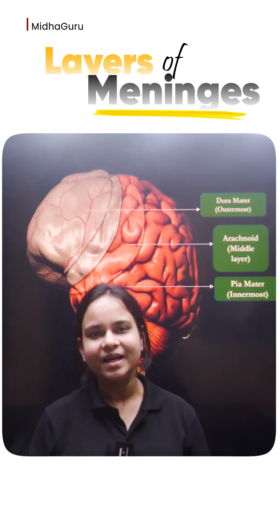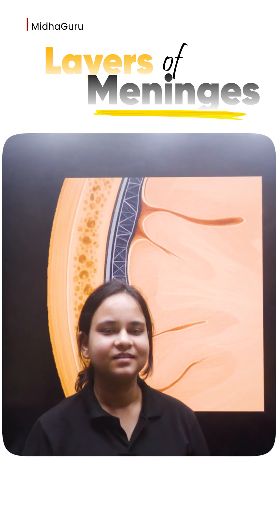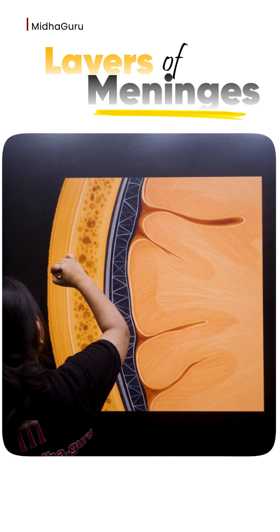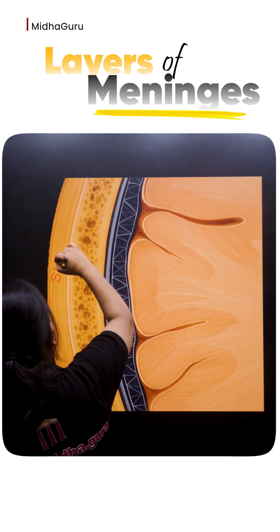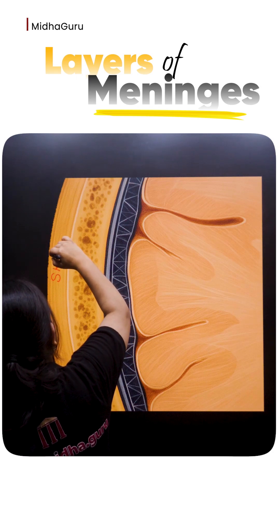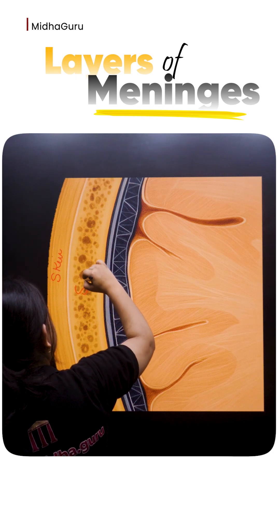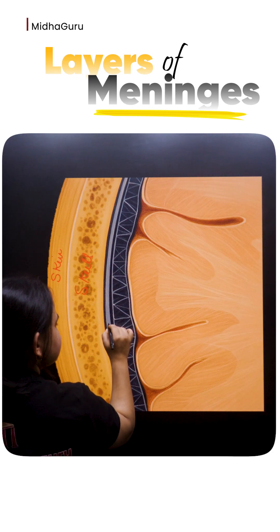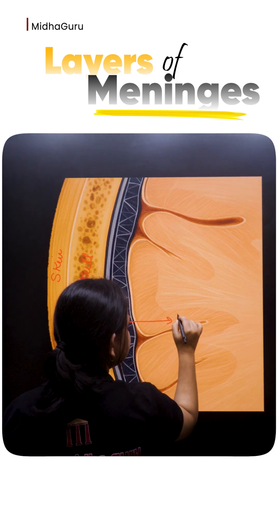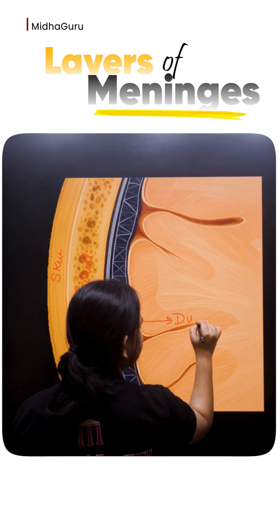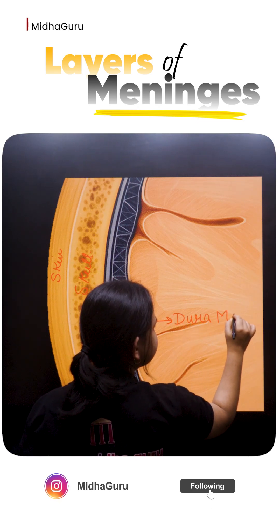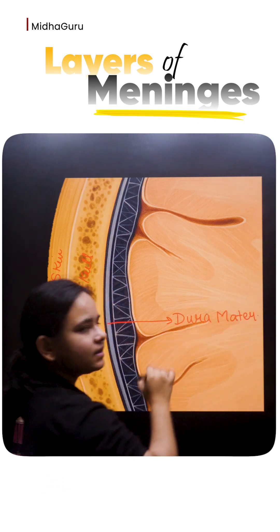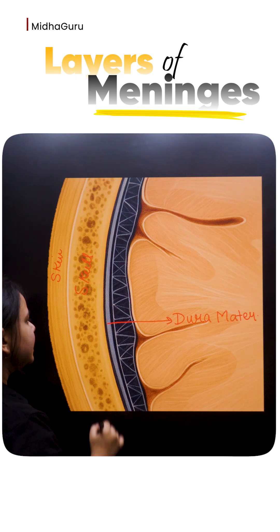Now let's discuss about the layers in brief. This is the layer of the skin, then we have the skull. Here starts the dura mater. The word dura has been derived from the word durable, that means tough and fibrous.